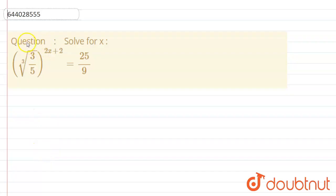Hello everyone, the question here is solve for x: cube root of 3/5 to the whole power 2x plus 2 equals 25/9. We have to solve for x.